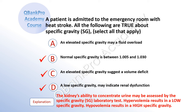The correct answer is B: normal specific gravity is between 1.005 and 1.030. C: an elevated specific gravity suggests a volume deficit. And D: a low specific gravity may indicate renal dysfunction. Explanation: The kidney's ability to concentrate urine may be assessed by the specific gravity laboratory test. Hypervolemia results in a low specific gravity. Hypovolemia results in a high specific gravity.